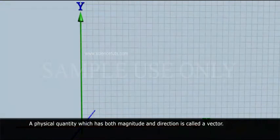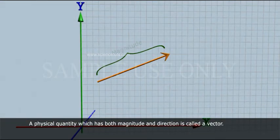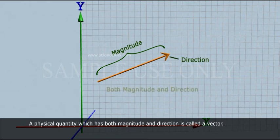Vector Quantity: A physical quantity which has both magnitude and direction is called a vector.